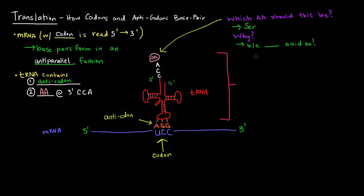Why should it be a serine? Because the mRNA said so. The mRNA codon determines what amino acid should be attached here. Now this is the tRNA and this is the amino acid and they're connected together. When they're connected together, they form this thing called the aminoacyl tRNA.